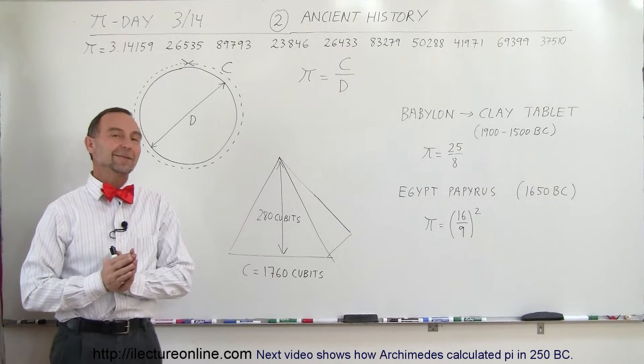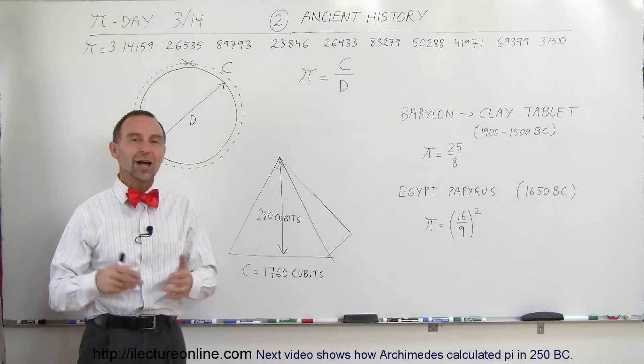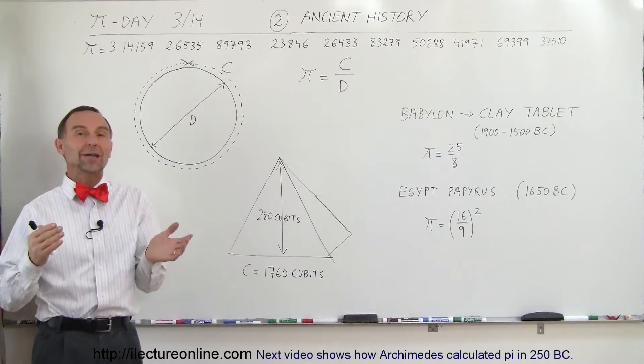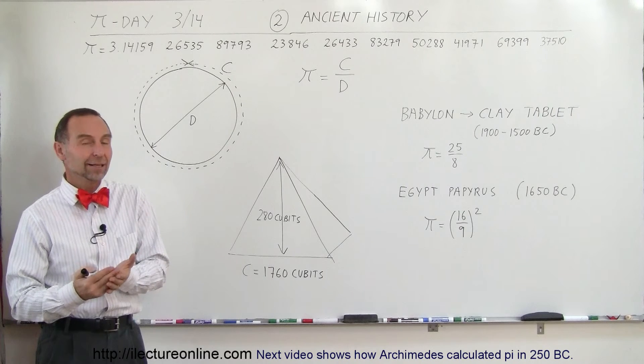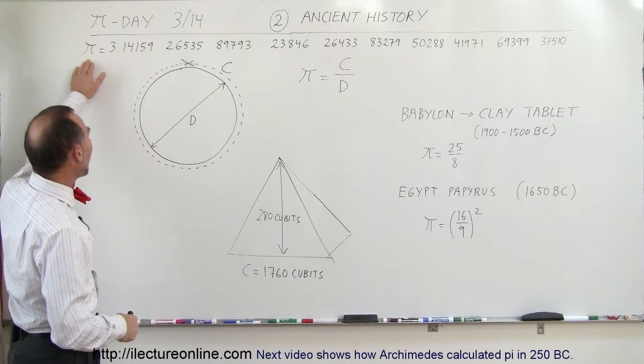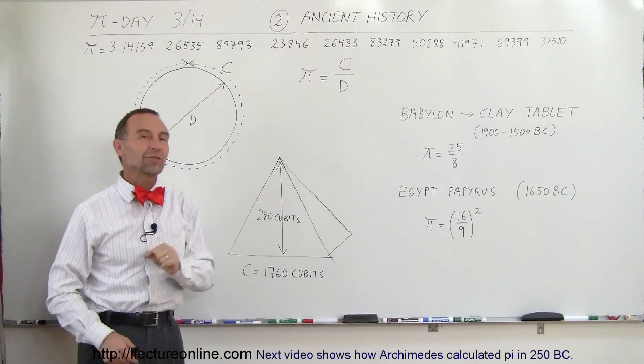Welcome to iLecture Online. In honor of Pi Day, we're going to take a look at the ancient knowledge of Pi. Back in those days, they didn't use the symbol Pi to indicate the value for Pi because Pi wasn't used until about the 1800s. But Pi, of course, we know now was 3.14 with a whole bunch of decimal places coming after that.